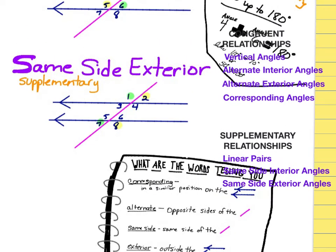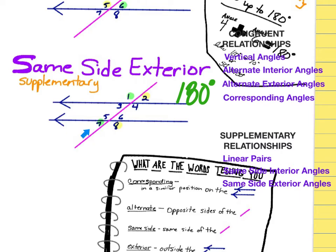The last situation is called same side exterior, which is our third supplementary relationship, so that's 180 degrees. Same side means both on the left or both on the right. Exterior means one needs to be above the two sets of parallel lines and one below — so these are the exterior or outer portions.